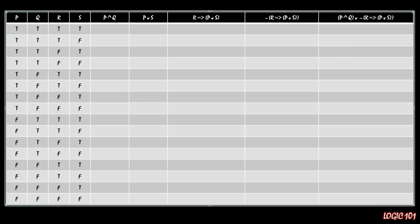That is brutal — just filling that out. Imagine if we had a fifth simple sentence: instead of 16 rows we'd have 32. A sixth simple sentence would give us 64 rows, and you're pretty soon running out of paper. I'm actually surprised I could fit four simple sentences on a single slide. That's one of the many reasons why this process sucks.